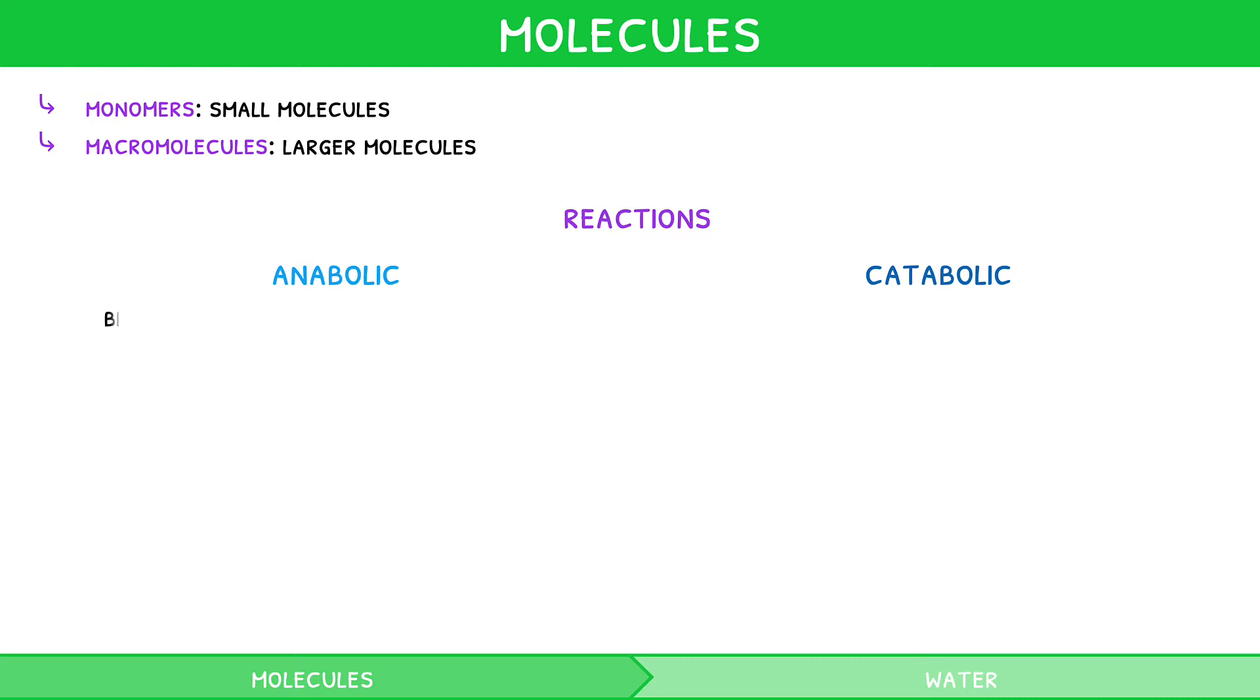Anabolic reactions bind together multiple monomers to form macromolecules. They are generally condensation reactions, i.e., they produce water.